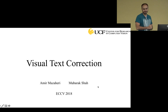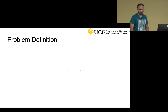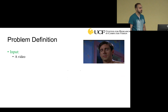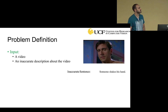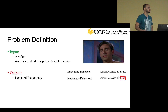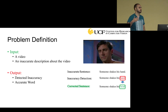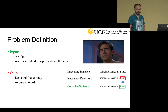Hello everyone, my name is Amir Mazahiri and I'm here today to present my work Visual Text Correction, which will be published in ECCV 2018. The input to this problem is a video and an inaccurate description about the video, like the sentence 'Someone shakes his hand.' As you can see, there is no hand in the video, so it's an inaccurate sentence. The output is the detected inaccuracy — the word 'hand' is inaccurate — and an accurate word to replace it, making the sentence 'Someone shakes his head.'